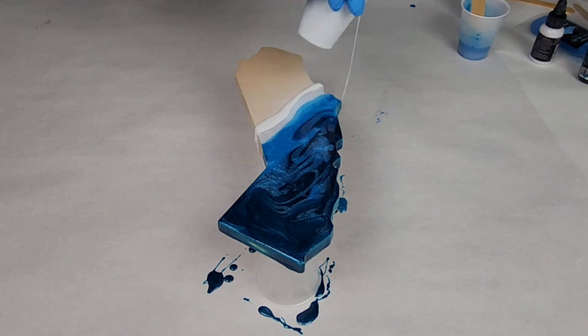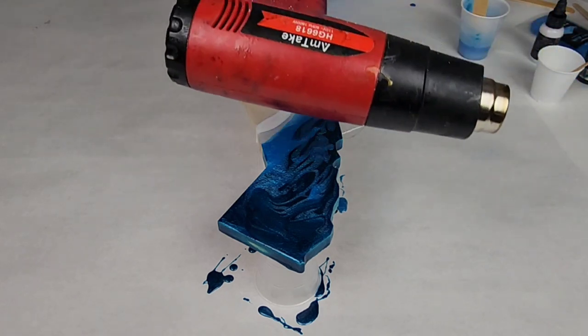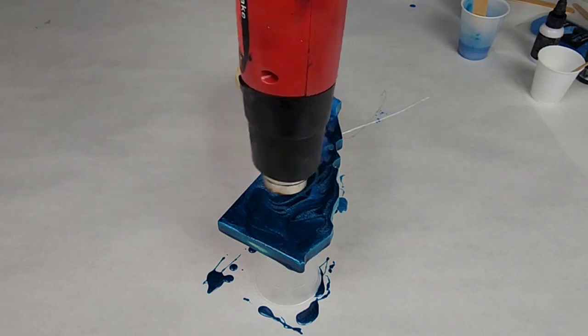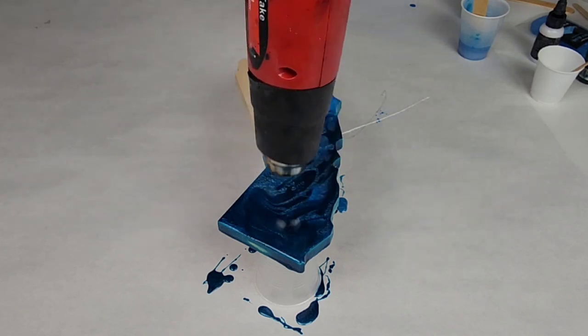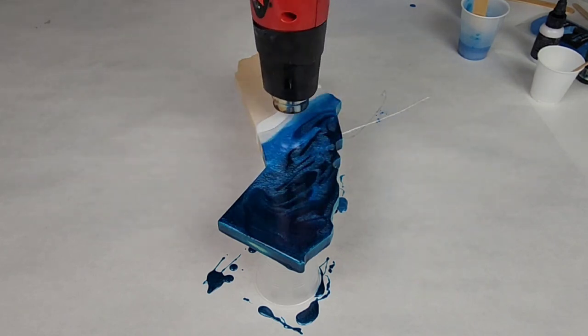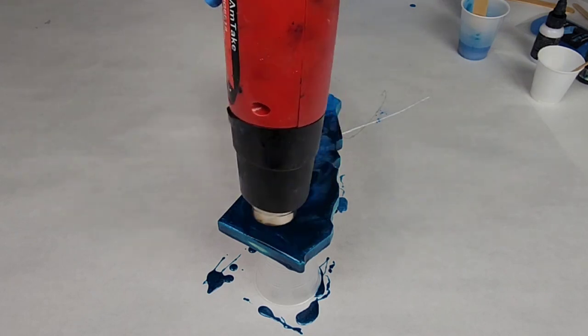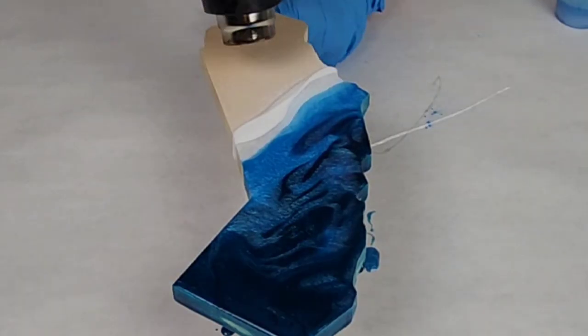I'm using an Amtake heat gun. And obviously this is a pretty small piece, so I don't need to do a lot to it. So I heated up all of the blue first, then the white, and then I pushed the white up into the blue as far as I wanted it to go.